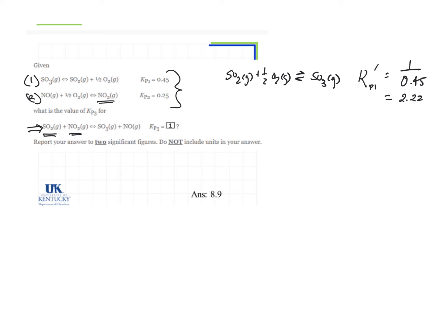When I reverse the reaction, I get NO2 gas, producing NO gas, plus one-half O2 gas.